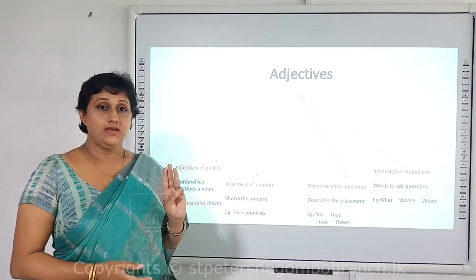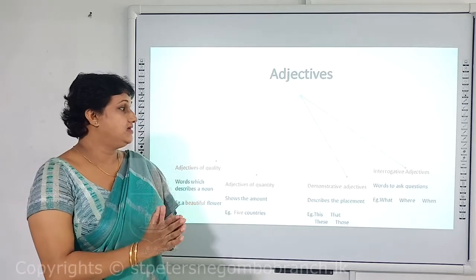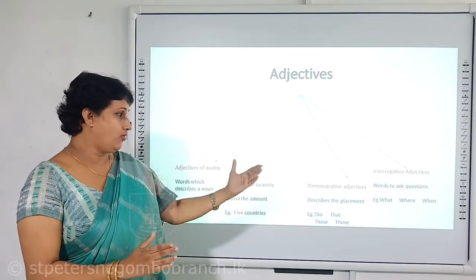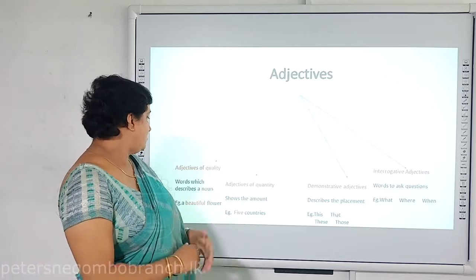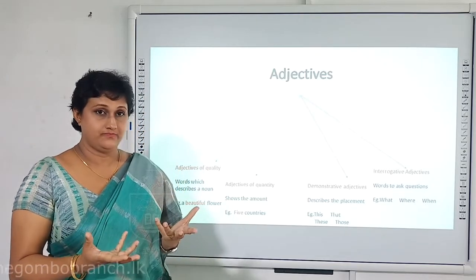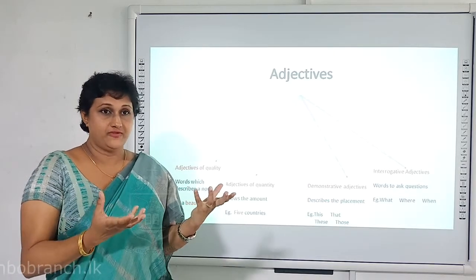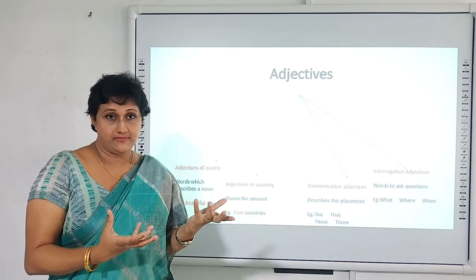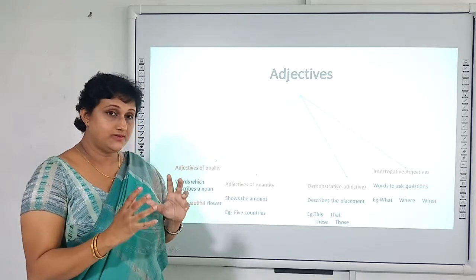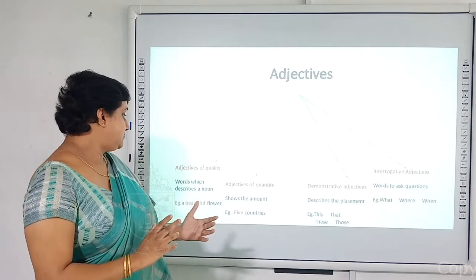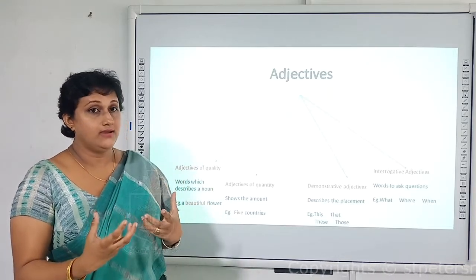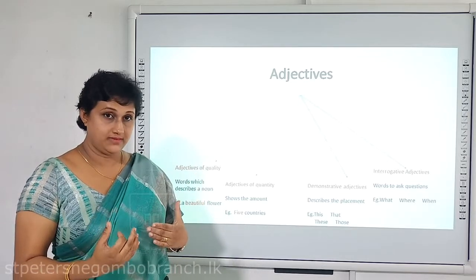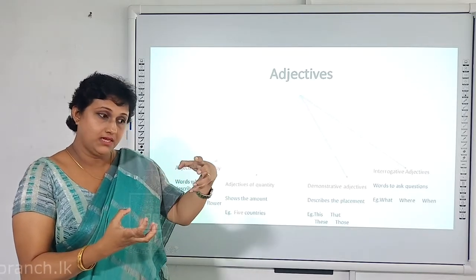We are now moving on to the third major word class: adjectives. There are four types of adjectives. The first is adjectives of quality — words which describe a noun, saying something about its appearance or nature. For example, 'a beautiful flower' — the word 'beautiful' qualifies the noun 'flower.'